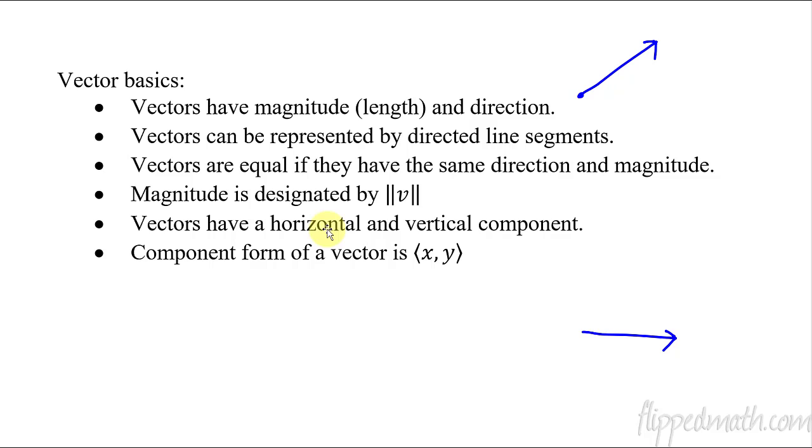Vectors, what else here? We've got horizontal and vertical components. Now what that means is if you start at the beginning point, the initial point of a vector, if you go this direction until it ends, that is the horizontal component. It's like the x component. And if you go this direction up until the vector stops, that is the vertical component. Or maybe you think of it as the y component.